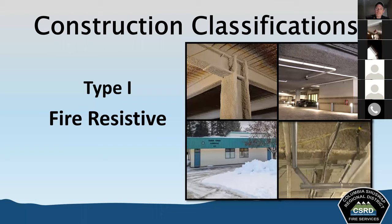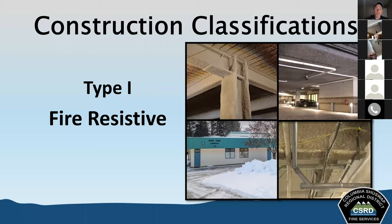Conditions to be aware of in Type 1 construction: compartments can retain heat for long periods, contributing to rapid fire development. Windows may be non-operating, limiting egress and ventilation options. A thicker form of glass may require more force to break. In extreme conditions, these structures still can collapse — they are fire resistant, not fireproof.